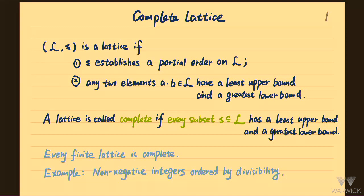A lattice is called complete if for any subset — not just two elements — it should have a least upper bound and greatest lower bound. A quick observation is that every finite lattice is complete. As a quick example, if we take the set of all non-negative integers ordered by divisibility, it's a lattice where the least upper bound is LCM and the greatest lower bound is GCD. But it's not complete because if you take the whole set there is no least upper bound. We will focus on a very concrete lattice.